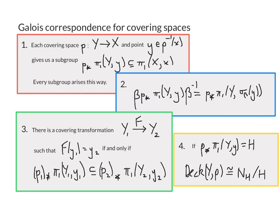Second, we have this formula: if β is some homotopy class of loops in X and we conjugate p* π₁(Y, y) by β, what we get is p* π₁(Y) based at a different point — based at σ_β(y). Remember, σ_β is the monodromy around β: you take y, move it around the loop β, you get to σ_β(y), and the claim is that the conjugate of p* π₁(Y, y) by β is p* π₁(Y, σ_β(y)).